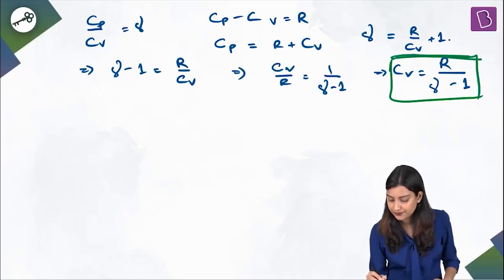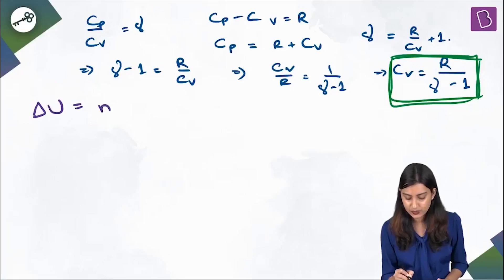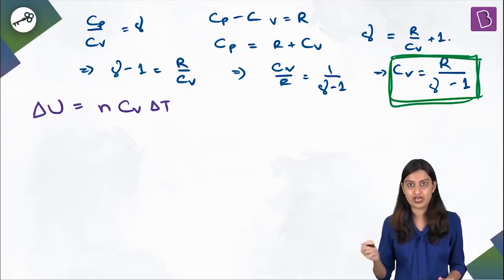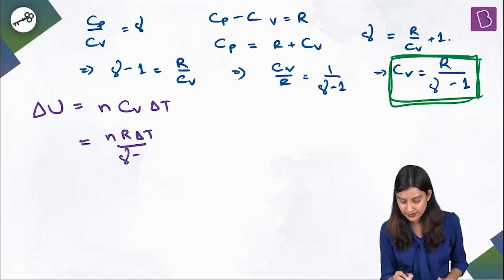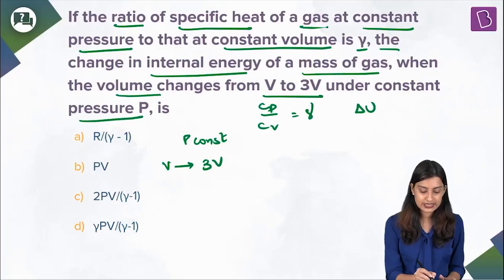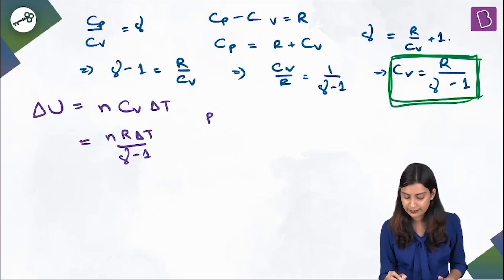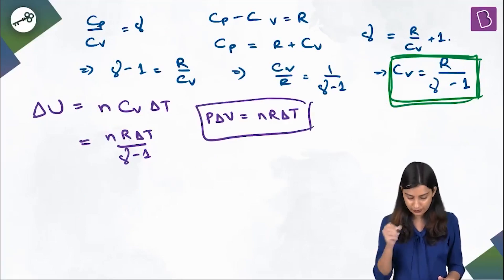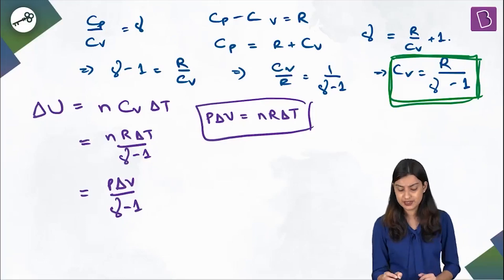Cv = R/(γ−1). Now, the expression for ΔU is: ΔU = nCvΔT. Substituting Cv = R/(γ−1), we get ΔU = nRΔT/(γ−1). Since we have a constant pressure condition, we know that pΔV = nRΔT. Applying that, the numerator becomes pΔV, so ΔU = pΔV/(γ−1).